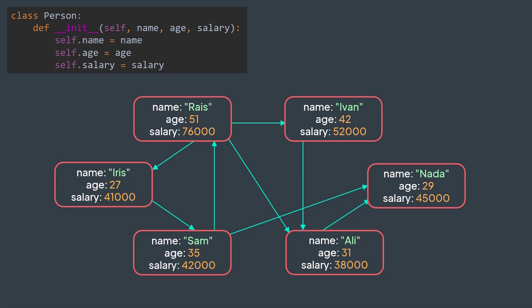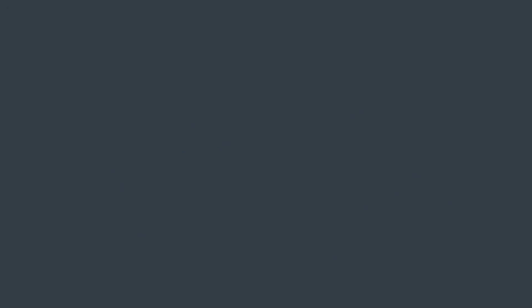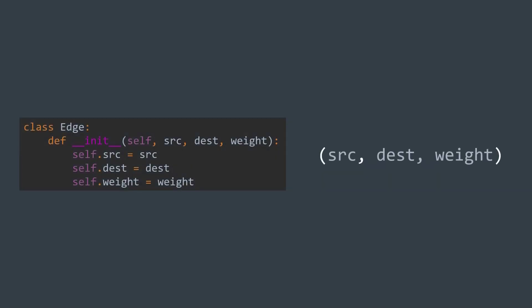And for edges, an edge usually contains two things: the source and the destination, the two vertices it connects. So we can either create a class Edge with two attributes, or simply use a tuple of two elements. Note that for weighted graphs, we need a third attribute, weight.